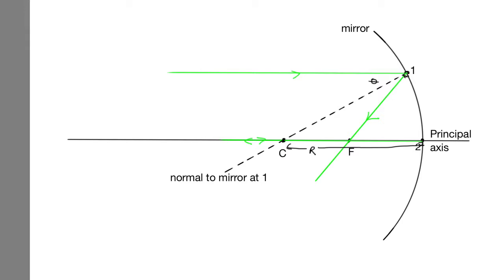So what I've drawn here is the normal at point 1. Now, the normal goes through the centre of curvature because whenever you draw a line from the centre of a circle to the radius of the circle, it meets at 90 degrees. So that's 90 degrees in there. And this angle is theta because the angle of incidence is the same as the angle of reflection.